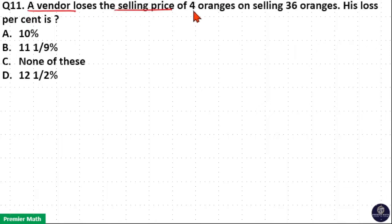A vendor lost the selling price of 4 oranges on selling 36 oranges. His loss percent is? Here when this person sells 36 oranges, he lost the selling price of 4 oranges.